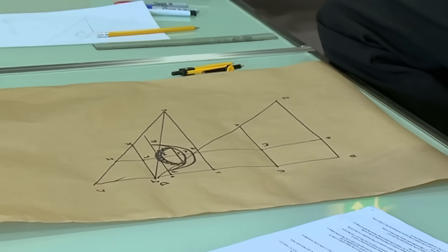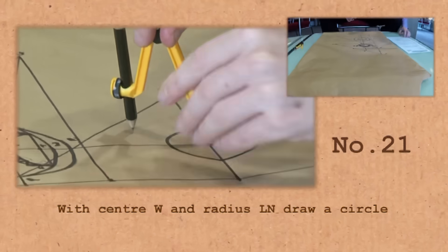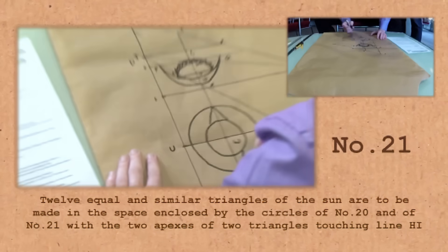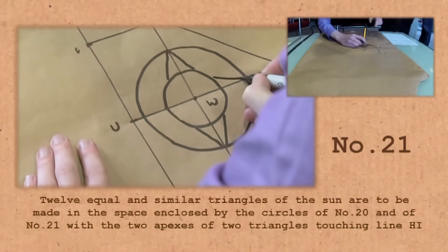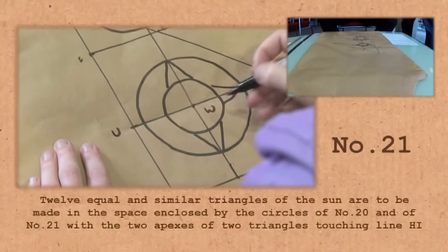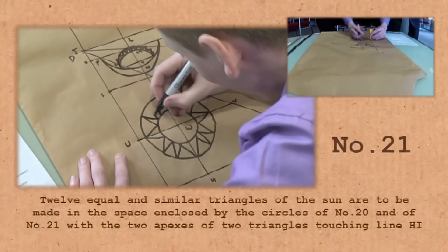Got to W. There aren't any X's and Z's, so yes, we're nearly there. It took that many letters though. It took nearly the whole alphabet. Just be glad there aren't 27 steps. What we would have done then? With centre W and radius LN draw a circle. Twelve equal and similar triangles of the sun are to be made in the space enclosed by the circles of number 20 and of number 21, and with the two apex of two triangles touching line HI.